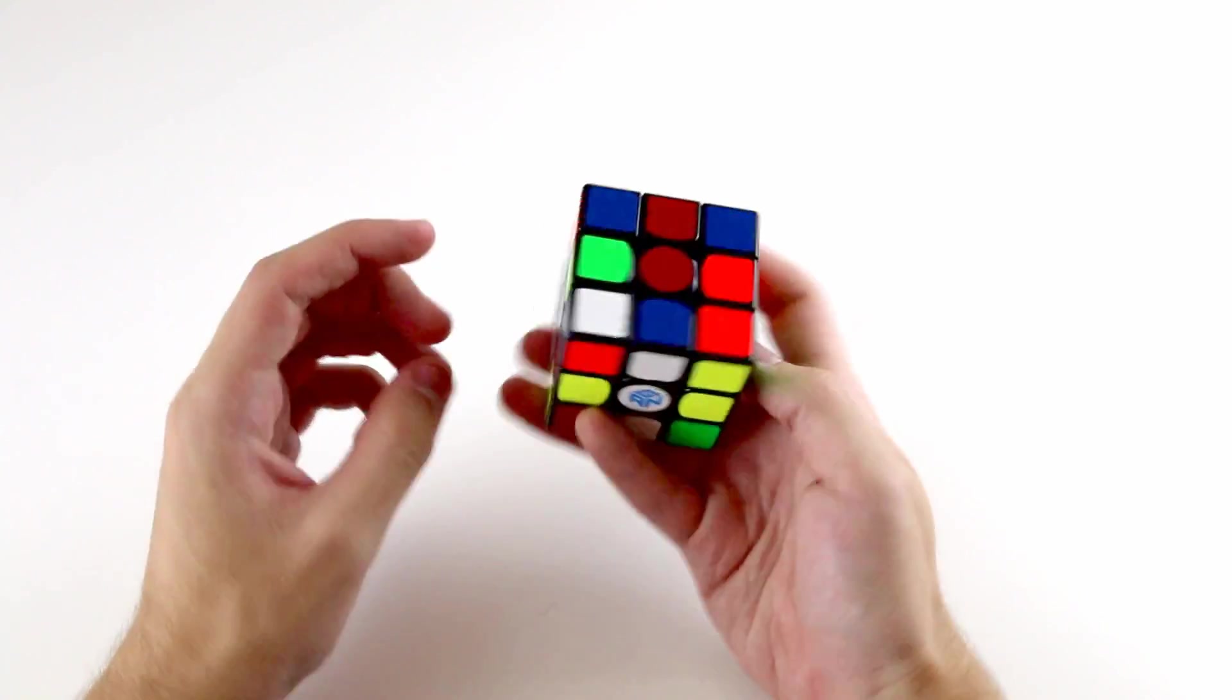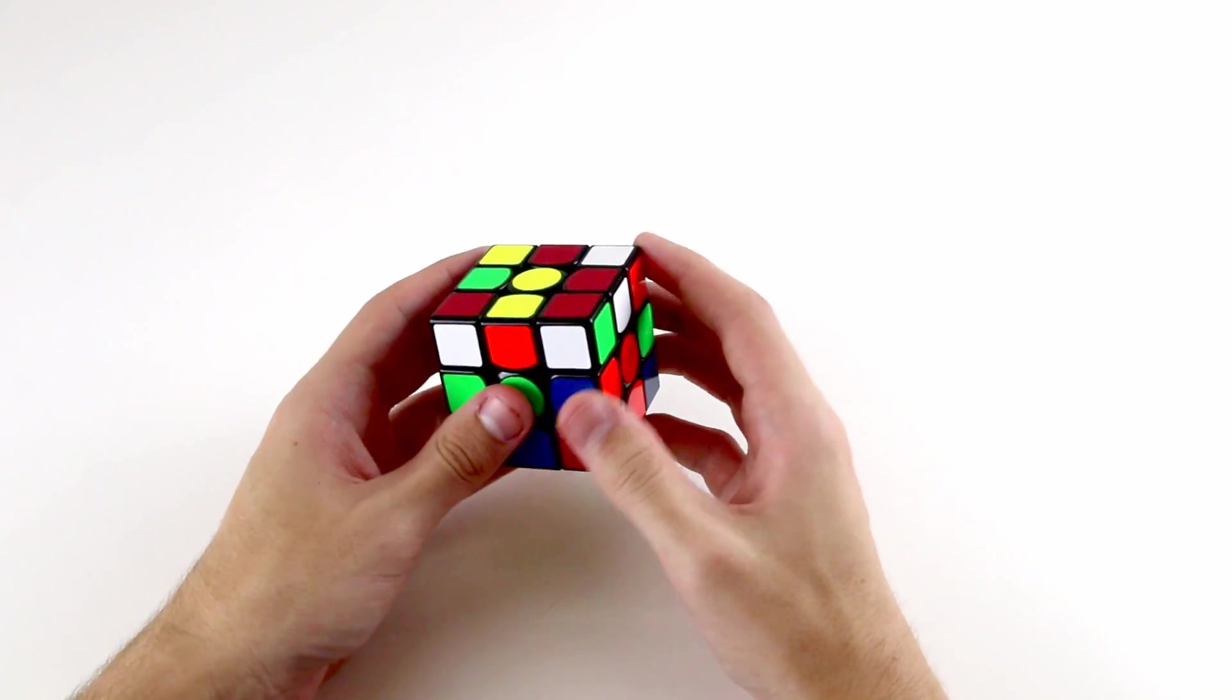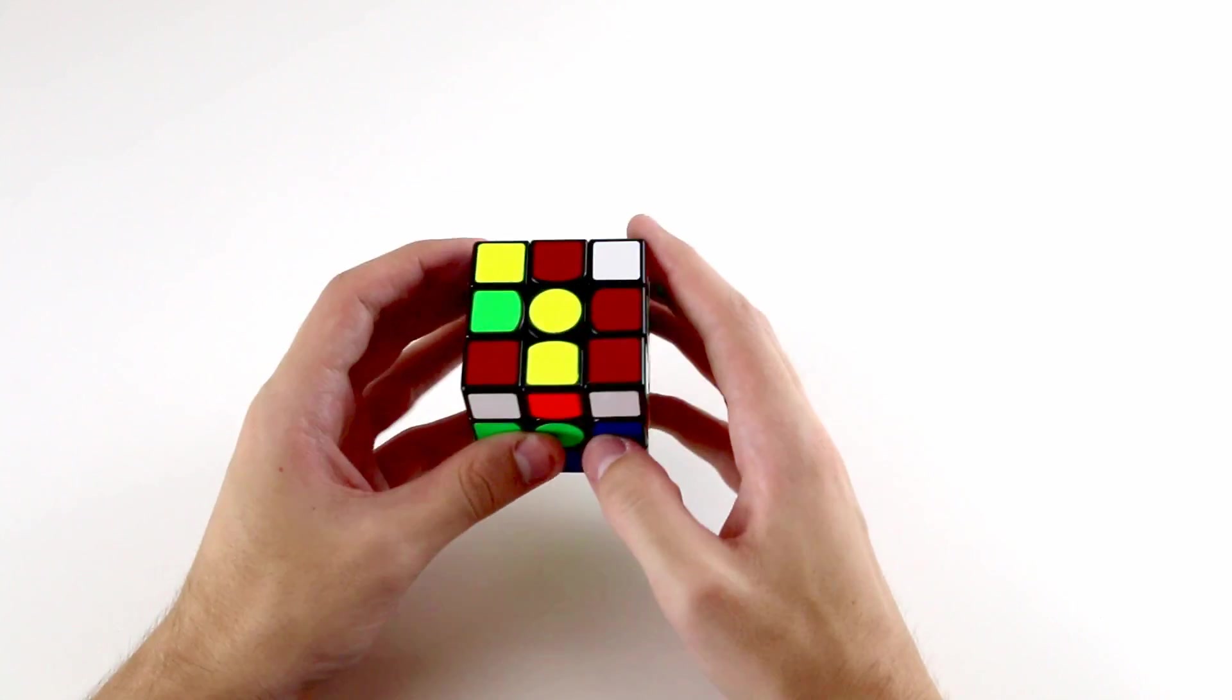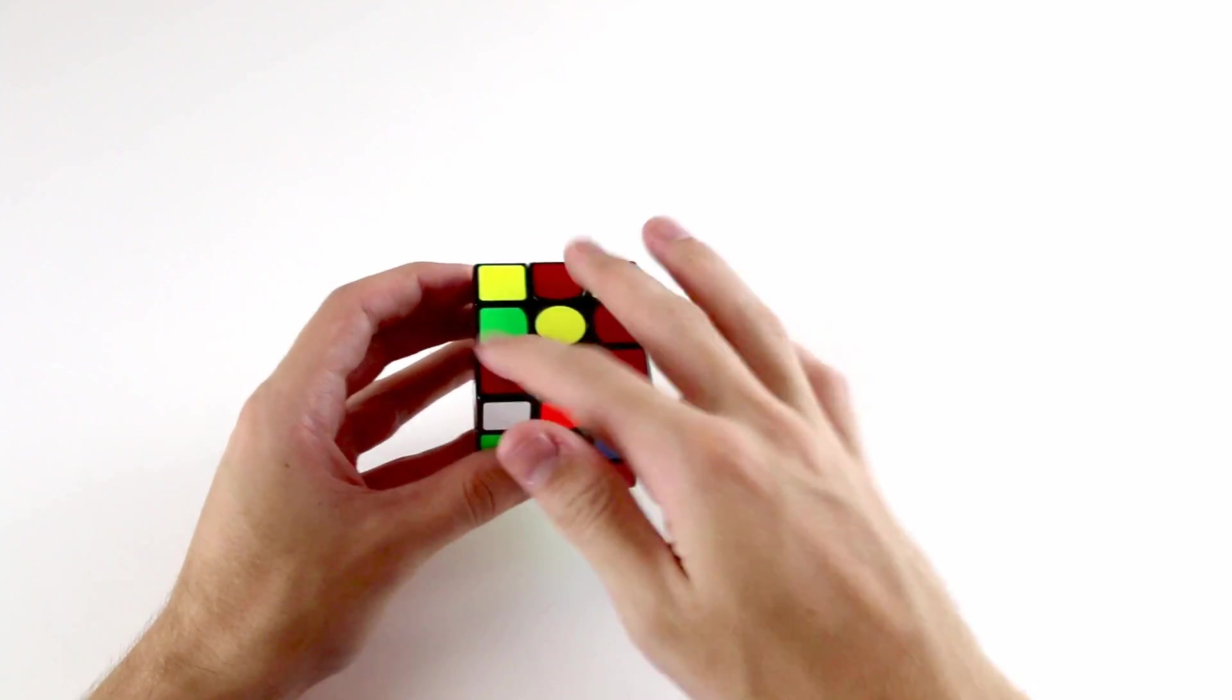Trying to track an edge piece that's over here and a corner piece that's down here is a recipe for disaster. So you really want to look for pieces that are connected to one another or in the top layer.